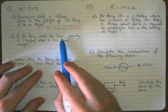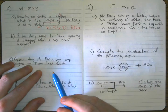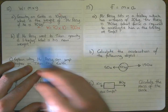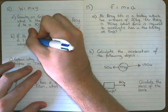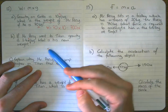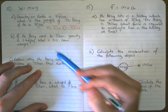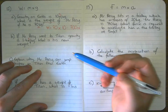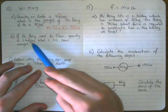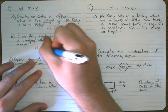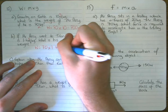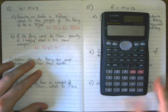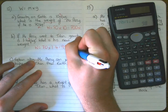If Mr. Percy went to Titan, gravity is 1.4 Newtons per kilogram — what's his new weight? We replace 10 with 1.4, but the mass of something is always constant, so Mr. Percy still has a mass of 70 kilograms. W equals 70 times 1.4, which gives us 98 Newtons. So on Earth he has a downward force of 700 Newtons, but on Titan only 98 Newtons.